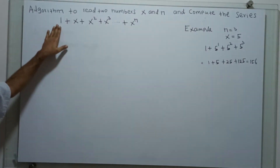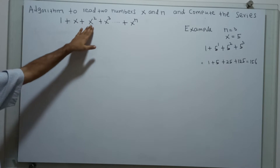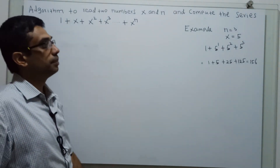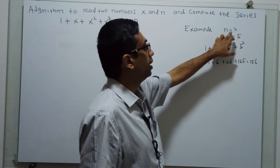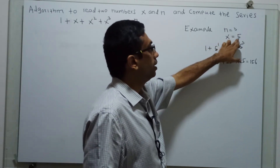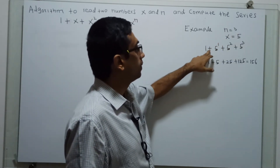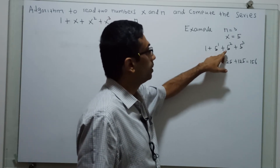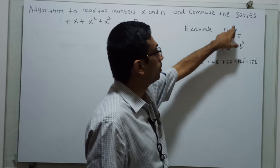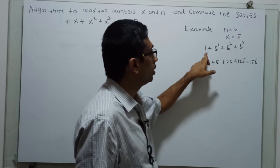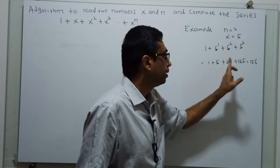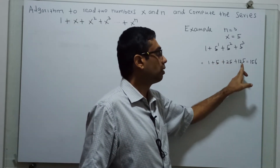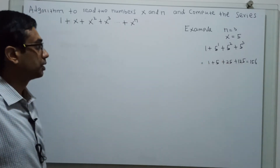That means this is x power 0, this is x power 1, x square, x cube, up to x power n. For example, if you have a value of n equal to 3 and x equal to 5, the series is 5 power 0 plus 5 power 1 plus 5 square plus 5 cube, which gives 1 plus 5 plus 25 plus 125, which is equal to 156.